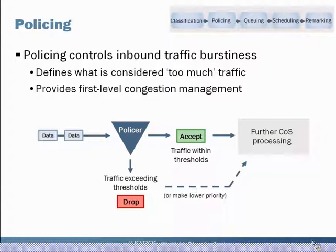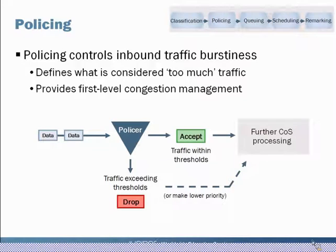As you can see in the diagram, we have data entering our device going into the policer. There are two actions that can happen. The first is when traffic is within thresholds — acceptable parameters — it's accepted and passed along for more CoS processing. The alternative is when you have too much traffic: you can drop that traffic so you don't overload the entire device.